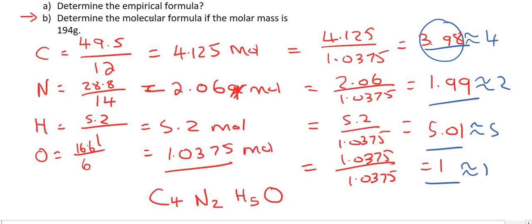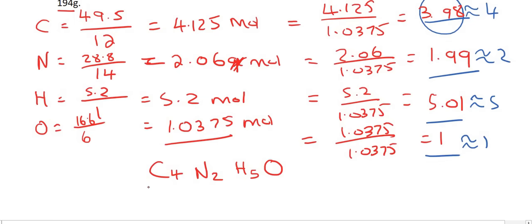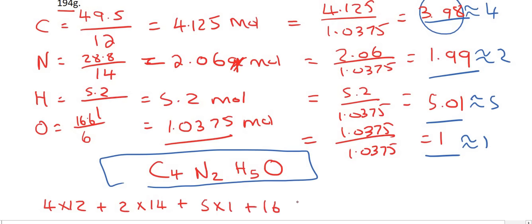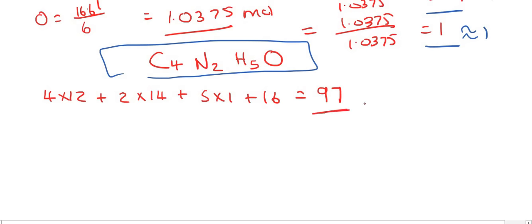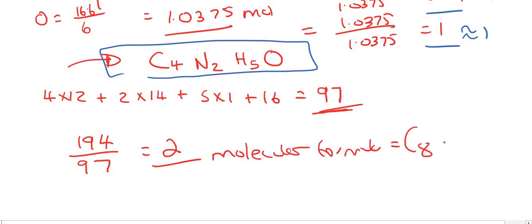The next question B says determine the molecular formula if the molar mass is 194. So what we do is work out the mass of this one. That's going to be 4 times 12 plus 2 times 14 plus 5 hydrogens plus an oxygen, which gives us 97. But now they tell us the molar mass is actually 194. So we see how many of these can fit into 194. So we divide it, and if we've done it correct it should be a whole number. Yes, we get the number 2. So that means the actual formula is double this one, and so the molecular formula is C8N4H10O2.